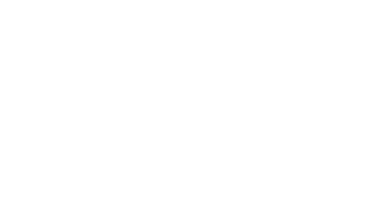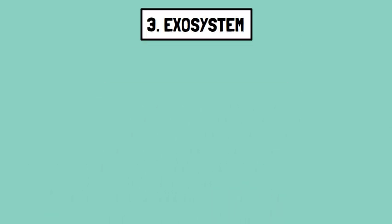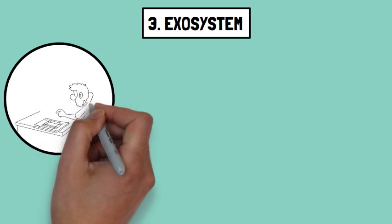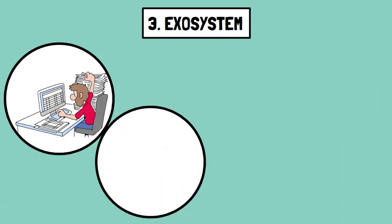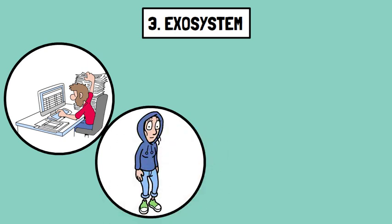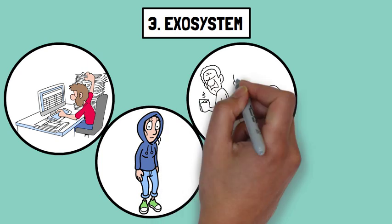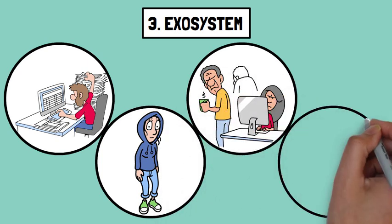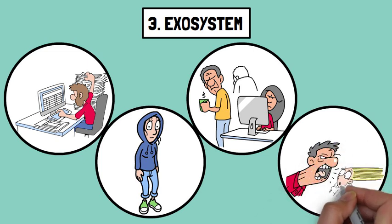Number three: Exosystem. This system includes indirect environments that still affect the individual. For example, a parent's work schedule might affect the amount of time they spend with their child, which in turn impacts the child's development. If a parent is stressed due to job insecurity, this stress can affect their interactions with their child, potentially influencing the child's emotional well-being and development.